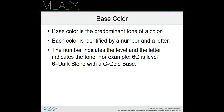Each color is identified by a number and a letter — this is what you see on the labels. The number indicates the level and the letter indicates the tone or base. For example, 6G is level 6, which is dark blonde, with a G meaning a gold base. You want to look at each individual brand of color because some of them have different letters that mean different things.